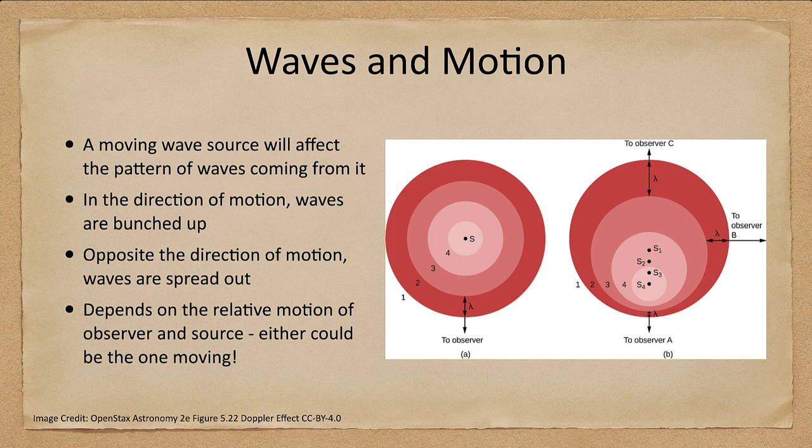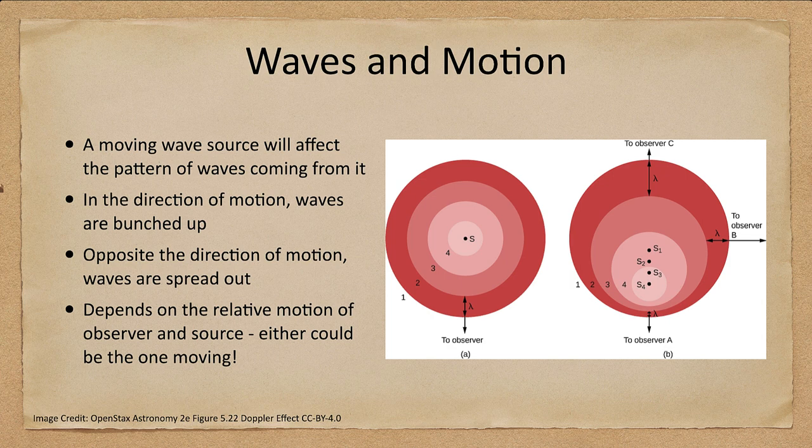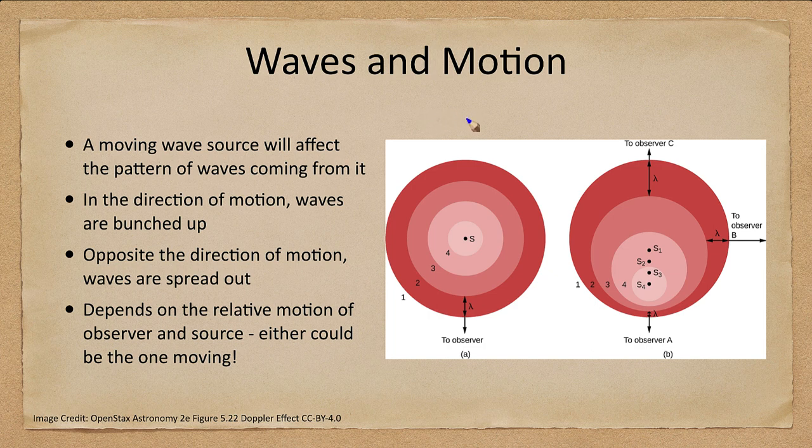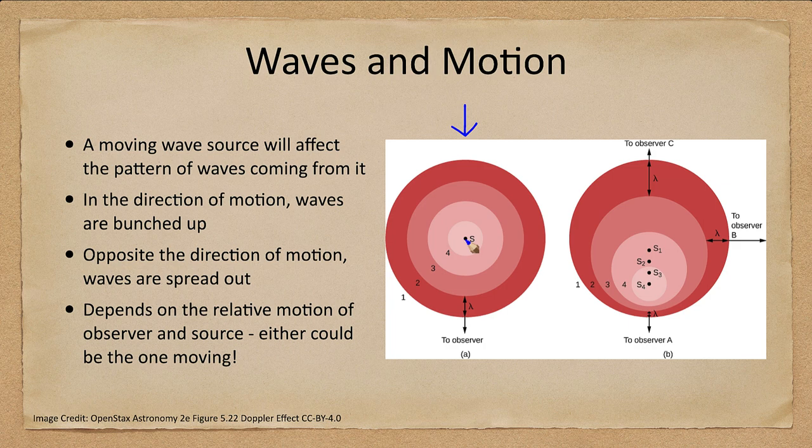Let's get started. What we see is a moving wave source. If the source of the wave is moving, that will affect the pattern of the waves coming from it. Let's look at the example here. Here we have a stationary source putting out waves and they are all equally spaced with the same wavelength.